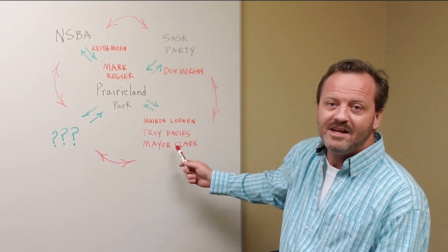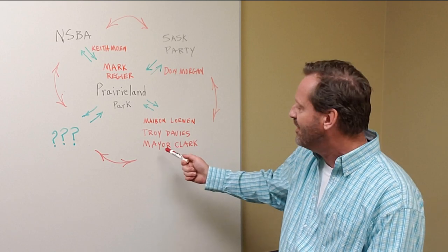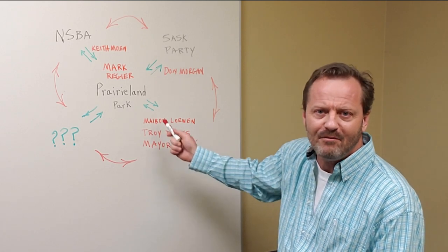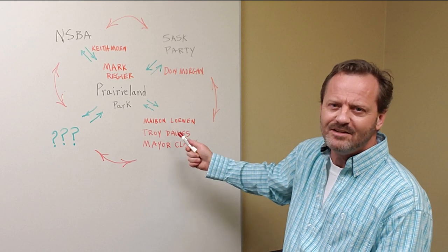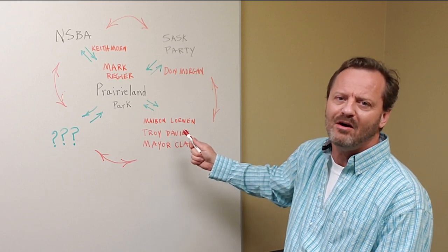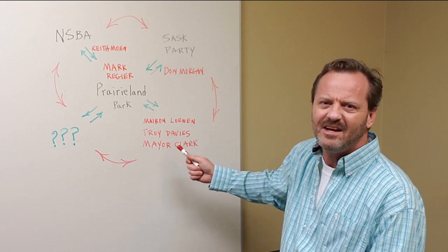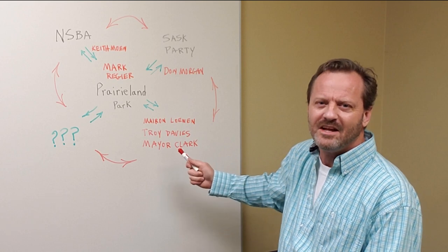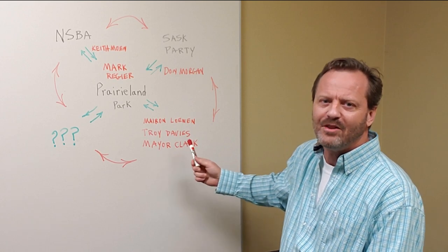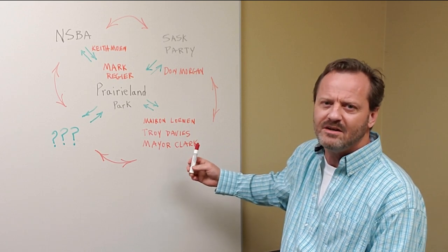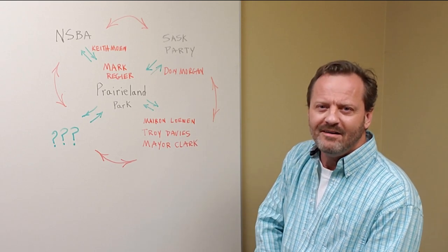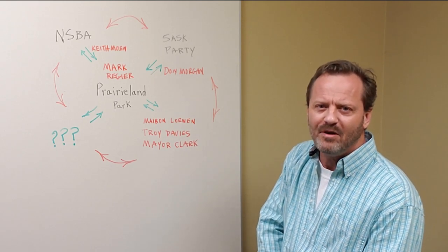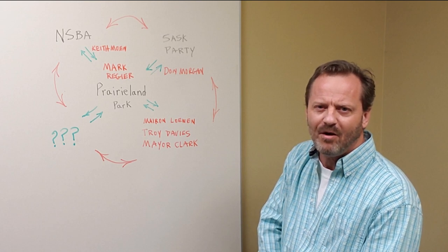When it comes to the city themselves, they've had councillors on the board like Troy Davies who voted for Prairieland Park all the time. You quickly came to that defense to show that Troy Davies was allowed to be on both because the city put them. It's still unethical, it's still an ethical breach whether or not you think it's a procedural breach. Maren Lowen is currently on that board. What is she doing to help small businesses that are getting hurt by Prairieland Park?